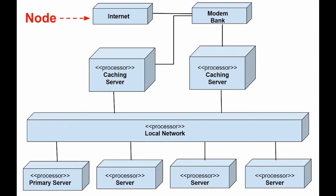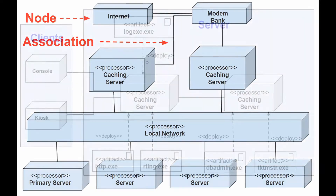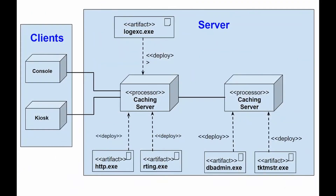Deployment diagrams show the structure of the runtime system. They model the elements of physical hardware and the ways of communicating between them. They can be used to plan system architecture, and they can also be useful for documenting the deployment of software components or nodes. These diagrams are important for visualizing, defining and documenting embedded, client-server, and distributed systems, as well as managing runtime systems through forward or reverse engineering.